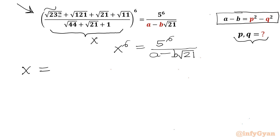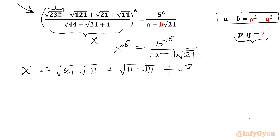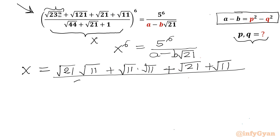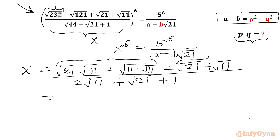Let me write x separately and simplify. We have square root of 232. We can factor 232 as 21 times 11, so let me write root 21 times root 11, plus square root of 121 which is square root 11 times square root 11, plus square root 21 plus square root 11. Also 44 can be factorized as 4 times 11, giving 2 root 11. Now I can take root 11 common from here and 1 common from the other two terms.